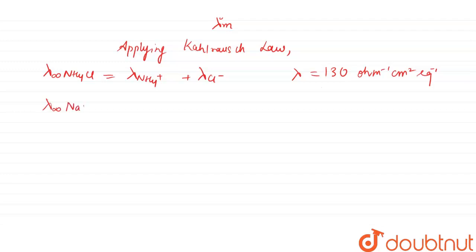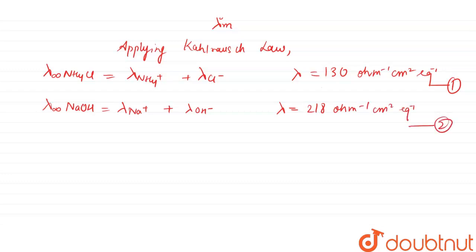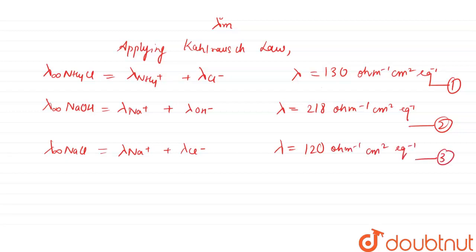Moving forward, for the infinite dilution of NaOH — this is equation number one — NaOH dissociates into Na⁺ plus OH⁻ ions and its value will be 218 ohm⁻¹ cm² equivalent⁻¹. This is equation number two. Now for NaCl, it dissociates into Na⁺ plus Cl⁻ and its value is 120 ohm⁻¹ cm² equivalent⁻¹. This is equation number three.